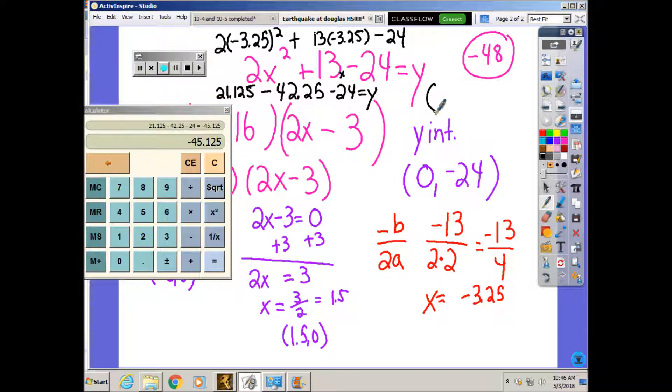Remember, your x value of the vertex was what you had for an axis of symmetry. And the y value was negative 45.125. So that's your total answer for the vertex. Negative 3.25 comma negative 45.125.